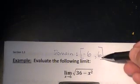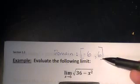Notice that the biggest value that we can put into this function is 6. We can't put anything bigger than 6. So when we're asked to evaluate the limit as x approaches 6, we still need to think about one-sided limits. We can't approach 6 from the bigger side.